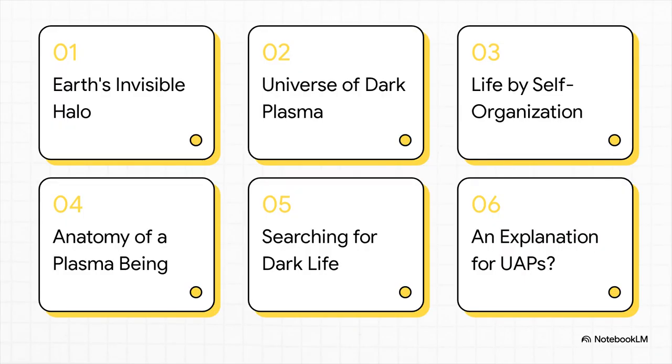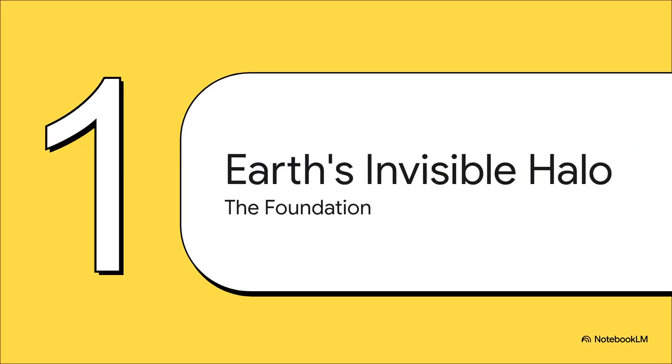Okay, so here's the game plan. We're gonna follow the paper's logic piece by piece. We'll start with this idea of an invisible halo around Earth, then look at what it's supposedly made of. Then we'll get into the really wild stuff: how life could pop up there, what it might look like, and maybe the biggest question of all, how in the world could we even go about searching for it?